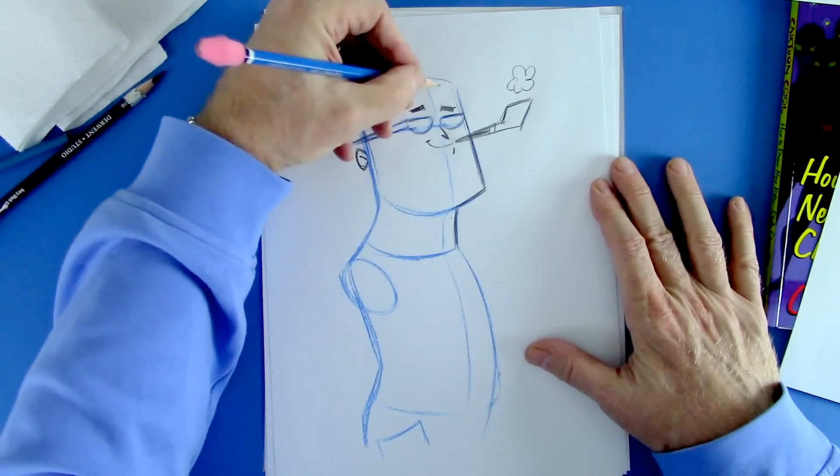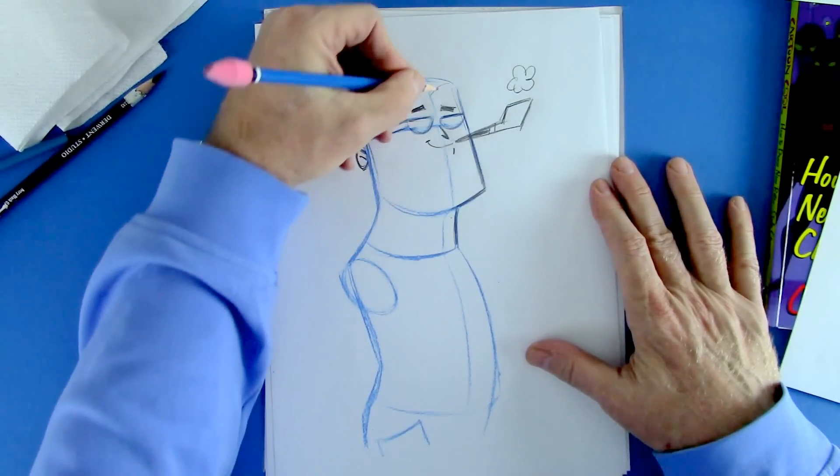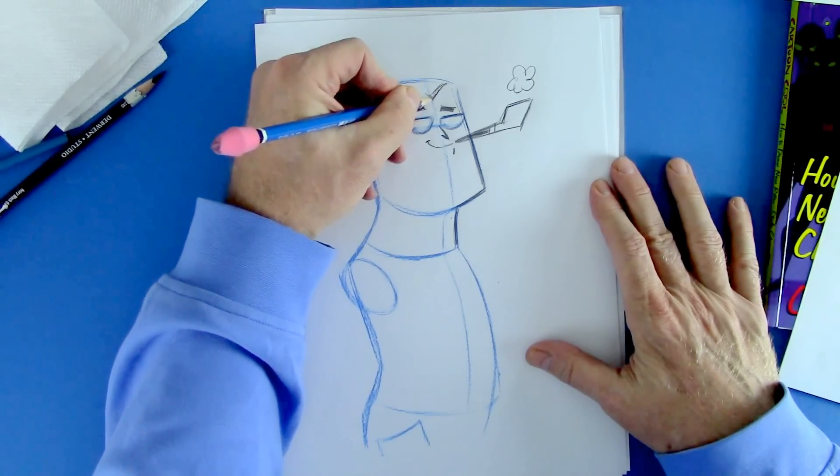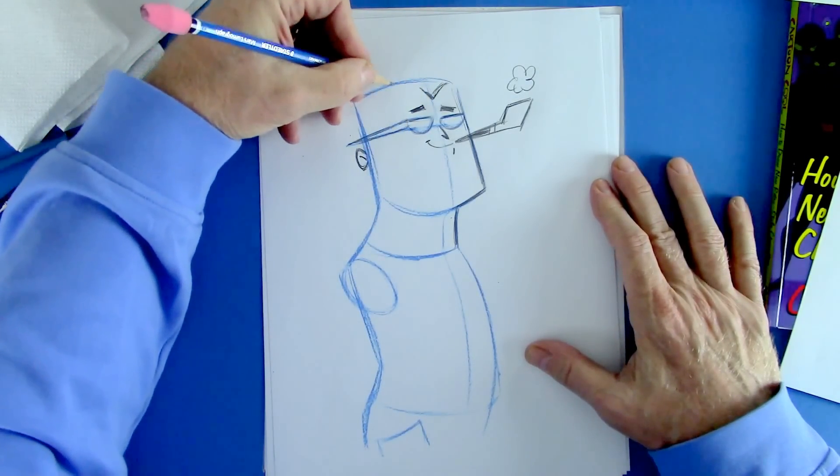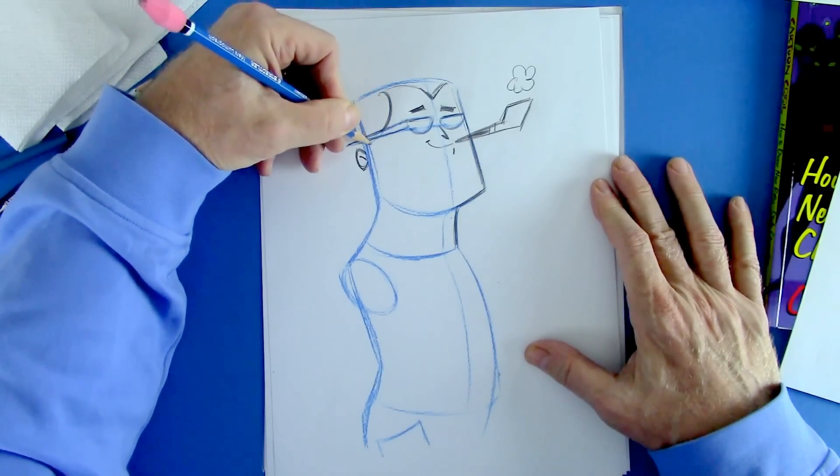All right, now we're going to give him his hairstyle. Right here at the center line, the center line will put the start of the hair, the origin of the hair right here. Bring it back and crop it like that to the ear.